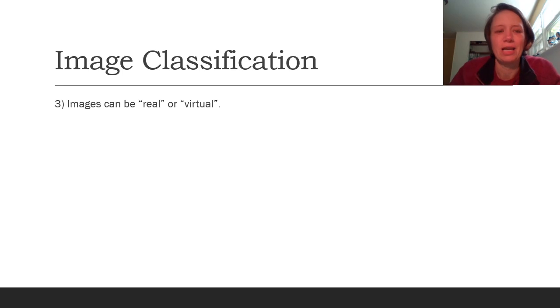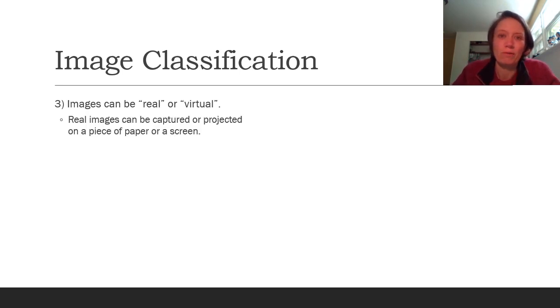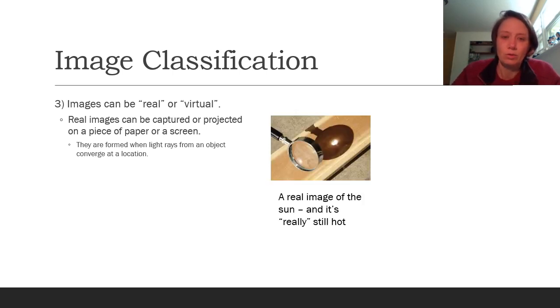And the last way we classify images is whether we call those images real images or virtual images. We'll learn a little bit more about what this means later on, but a rule of thumb is that real images are images that can be captured or projected onto a piece of paper or screen. So if you've ever seen a movie, obviously at a movie theater, that's a real image because it's being projected on a screen. Real images form when the light rays from an object converge at a location which means come together.